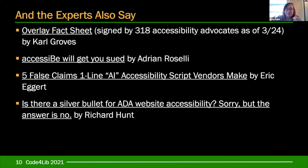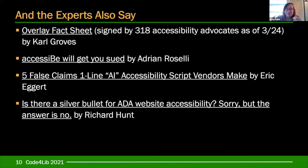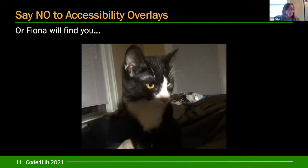So really, if somebody mentions an accessibility overlay for your library or museum website, just say no. There's a ton of resources, particularly the Overlay Fact Sheet, which as of yesterday was signed by 318 accessibility advocates and continues to grow — it's a clearinghouse for all the information as to why these are bad. Overlays have been a horrible vendor attempt to take advantage of the need for accessibility during this pandemic. Just say no. If you don't, Fiona will find you — and if Fiona doesn't find you, I will. Toodles.